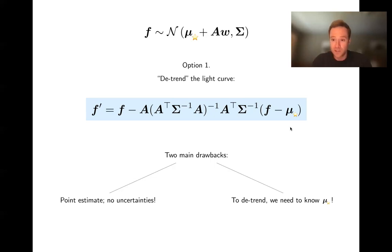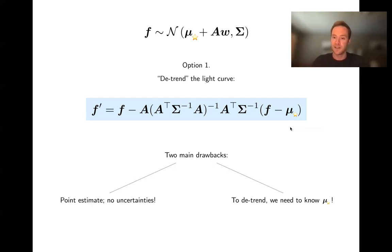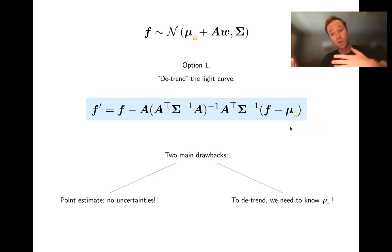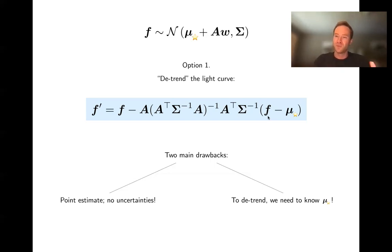There are many approaches to addressing this. For instance, what I would do in Everest for transits is mask them when computing the systematics model, so they never inform the fit and you never risk detrending them out. You could also proceed iteratively: detrend assuming the astrophysical model is zero, get an estimate for the detrended light curve, then refine your astrophysical model estimate and repeat. These are different approaches, but it is a drawback of doing detrending as a pre-processing step.